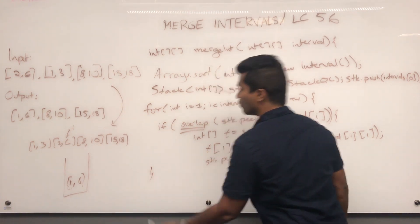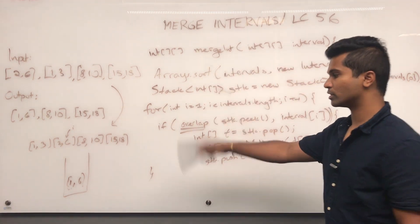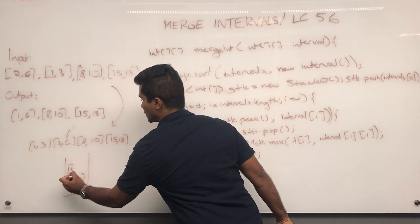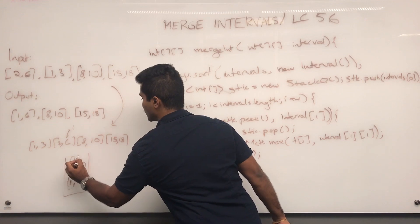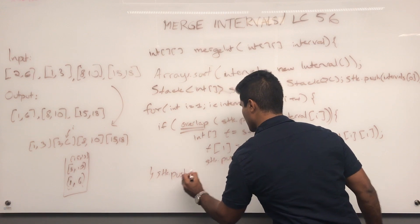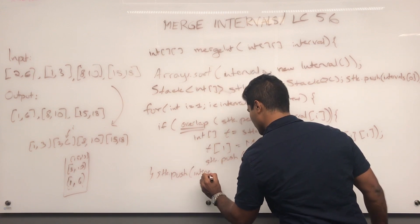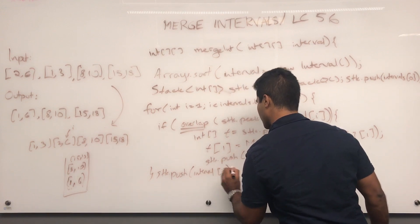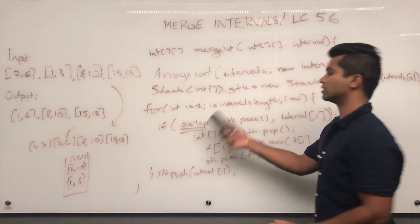If there's no overlap, it's very simple. I just push that next guy on there, 8 comma 10, and then same thing with 15, 18. Stack dot push interval of i. And that finishes the core logic.